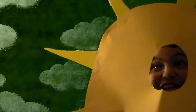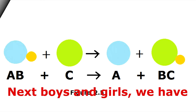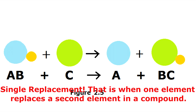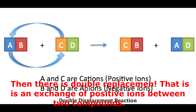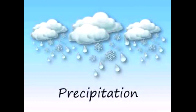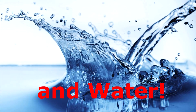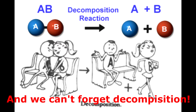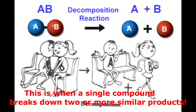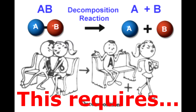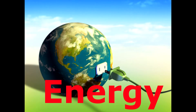Right buddy? Sure thing Morton! I bring the heat! Okay Mr. Sun, that's enough! Boys and girls, we have single replacement. That is when one element replaces a second element in a compound. Then there is double replacement. That is an exchange of positive ions between two compounds, such as precipitation, gas, and water. And we can't forget decomposition. This is when a single compound breaks down into simpler products. This requires heat, light, and energy.